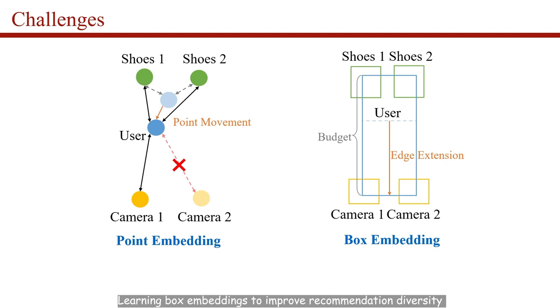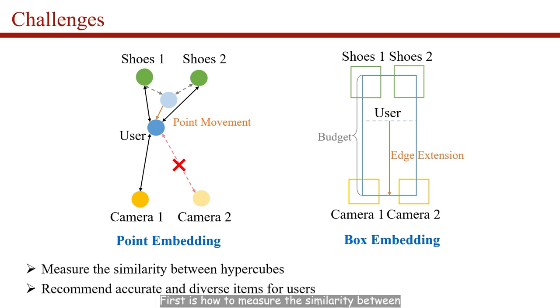Learning box embeddings to improve recommendation diversity is not a trivial task, and there are two major challenges. First is how to measure the similarity between hypercubes of users and items. Second is how to recommend accurate and diverse items for users.